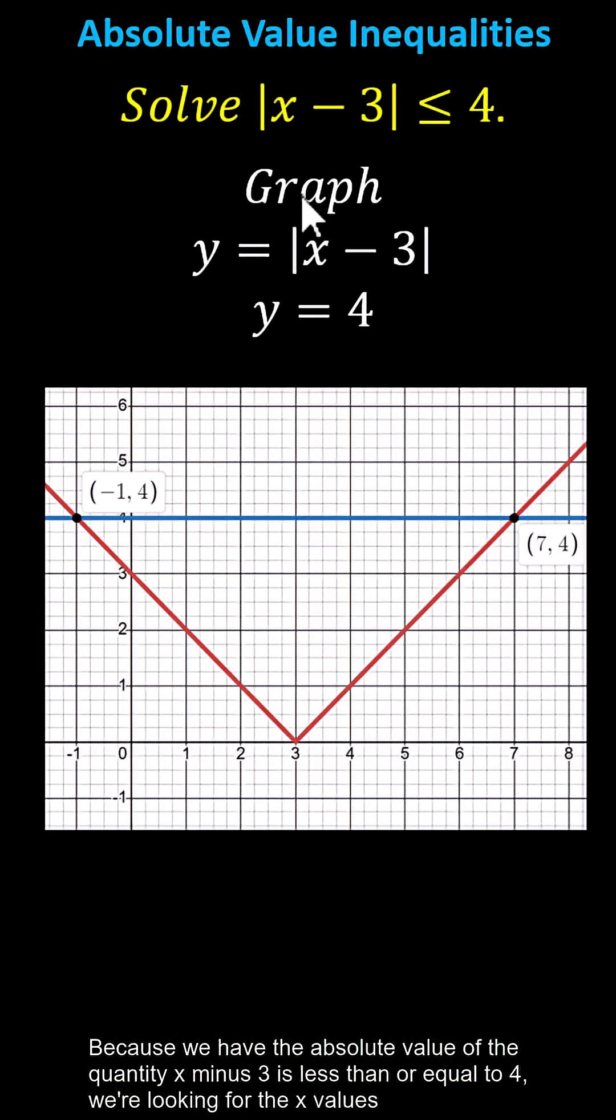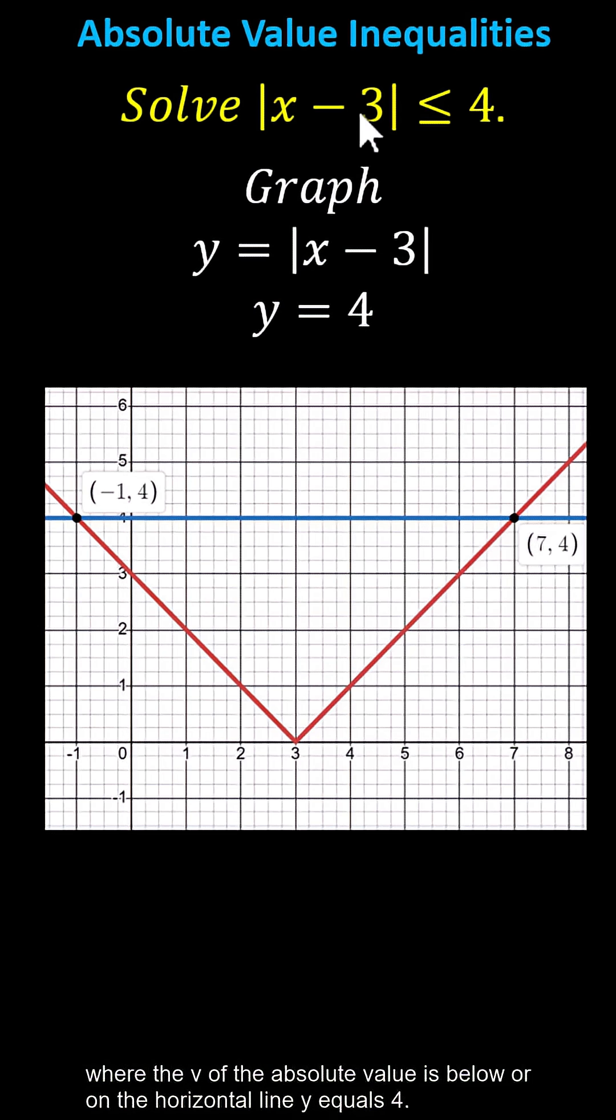Because we have the absolute value of the quantity x minus 3 is less than or equal to 4, we're looking for the x values where the v of the absolute value is below or on the horizontal line y equals 4.